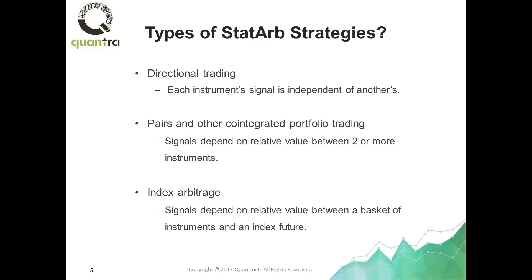But it doesn't have to be just two instruments. For example, Apple versus Google. It could be an entire portfolio such as five technology stocks — Apple, Google, Amazon, Microsoft, Facebook — which could form a portfolio. And if they are found to be co-integrated, we can trade them using this type of setup strategy. We will explain what co-integrated means in a little bit and also in detail in the course.